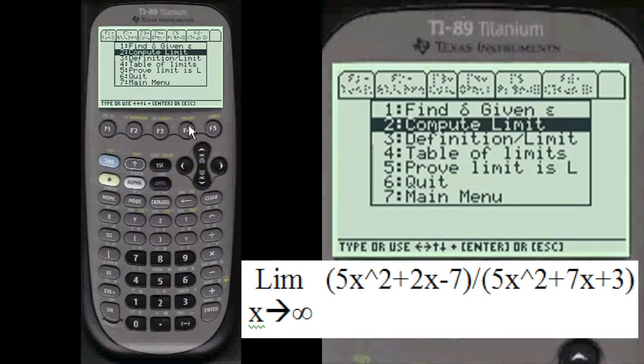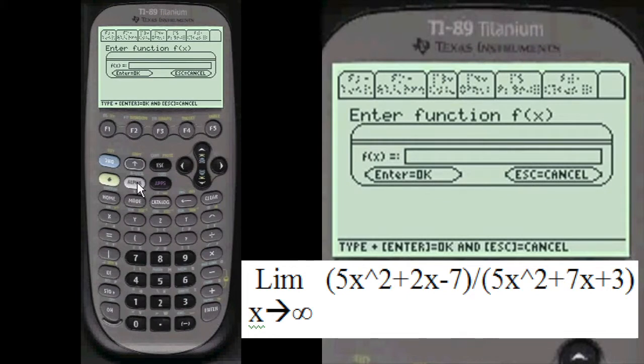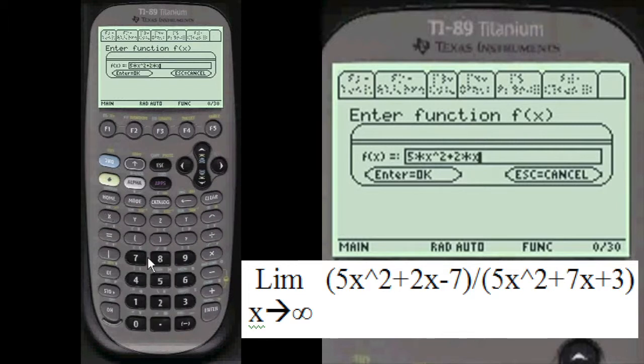Compute the Limit, that's what we want to do. Press Alpha before you enter any function in these entry lines here. Alpha 5 times X, this is a test problem, plus 2 times X minus 7.